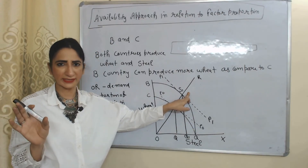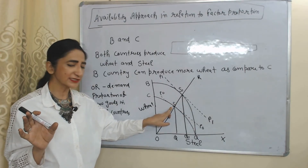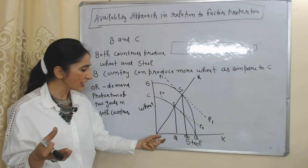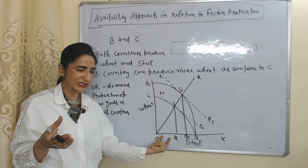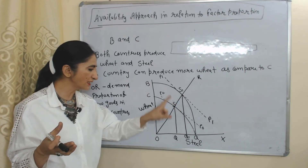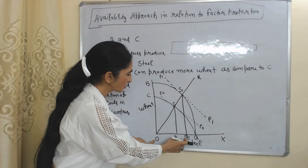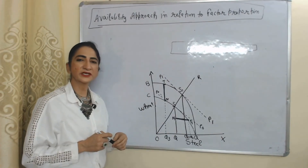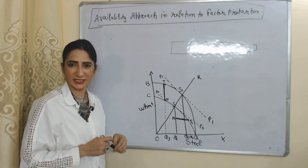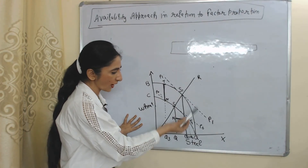The S point shows that country C needs SQ quantities of wheat and OQ quantities of steel. The S1 point shows that country B needs S1Q1 quantities of wheat and OQ1 quantities of steel. Now we will see how both countries will do international trade. The production point of country C is T1.